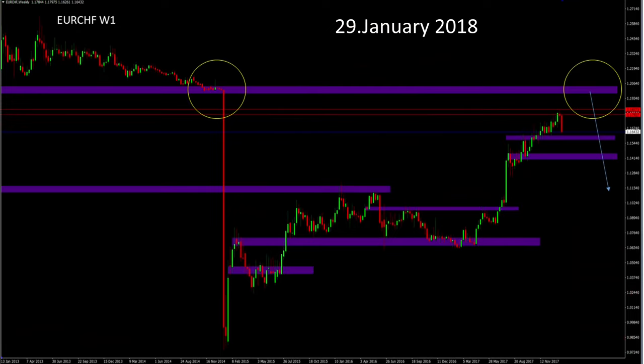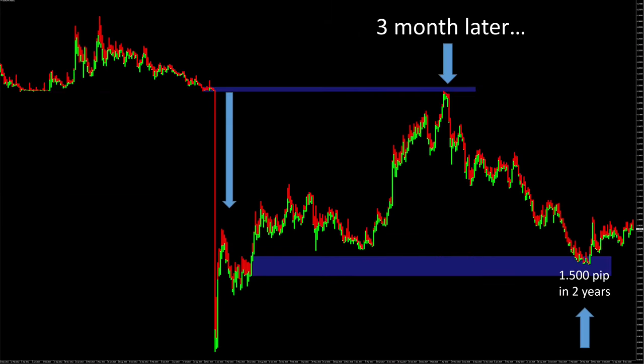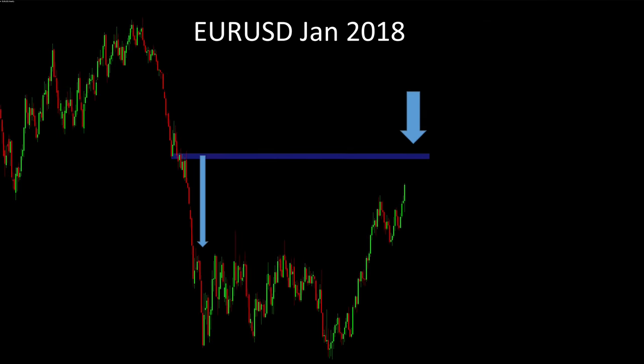Exactly three years ago I published an outlook on the future course of the Euro Swiss Franc on my blog at Forex Factory. For this purpose, I have drawn a resistance zone, with the assumption that the price could go sharply down there. Three months later, the price actually hit this resistance zone, and then went down 1500 pip within two years.